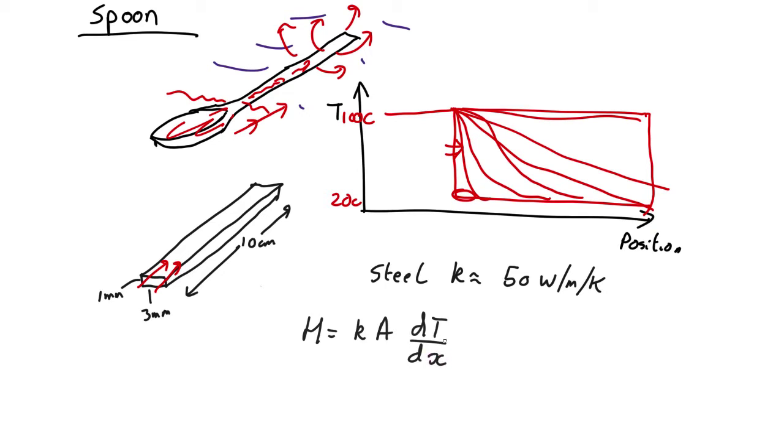Now what's the temperature gradient? That's going to be rather complicated. At the beginning it will be very strong here and flatten out, but roughly speaking it's going to be about the temperature difference which is 80 centigrade divided by the length which is 10 centimetres or 0.1 metres. Area is 3 millimetres times 1 millimetre which is 3×10⁻⁶ metres squared and k equals 50. So factoring that in, this comes out as about 0.12 watts.